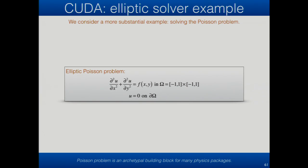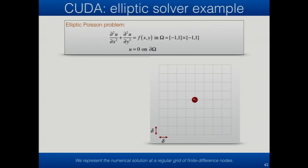So: Laplacian U equals F, with homogeneous Dirichlet boundary data. For finite difference, we know we're going to express the solution as a set of values at nodes on a Cartesian grid. By the way, we've re-uploaded the slides so you should be able to download them without a password. At every node, we're going to approximately assert that this PDE is valid based on local interpolation of nodal data from the grid.